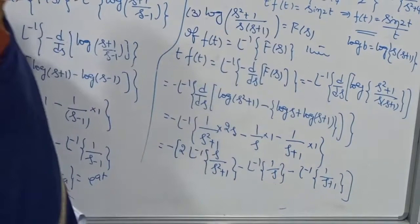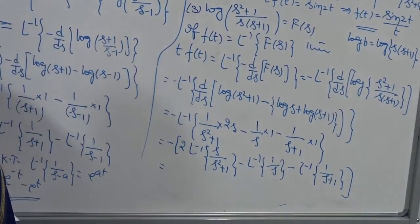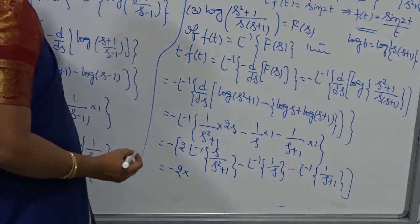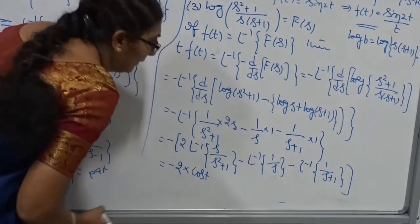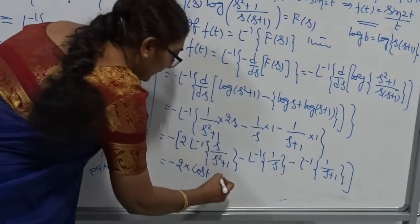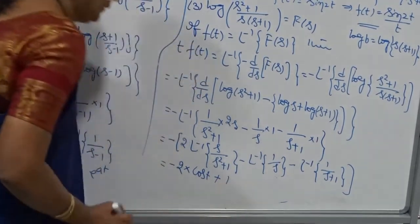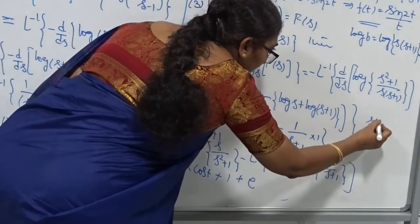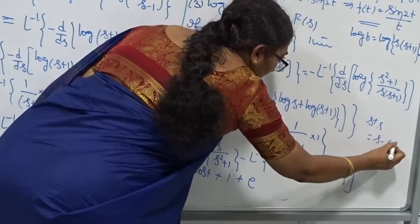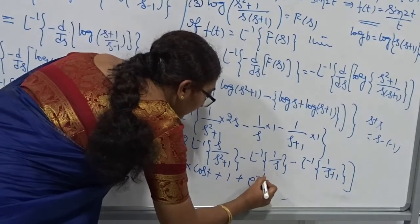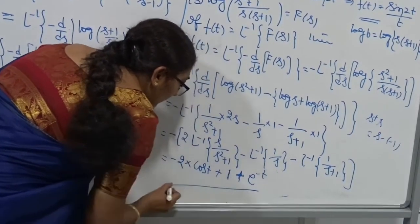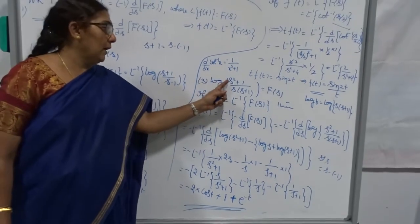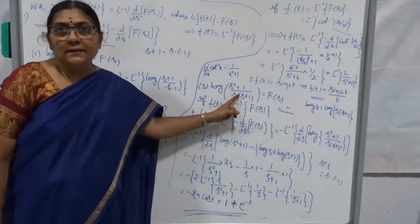Taking the minus sign inside: minus 2 times L⁻¹ of s/(s²+1) is cos(t) where A=1. Minus minus is plus: L⁻¹ of 1/s is 1. Minus minus is plus: L⁻¹ of 1/(s+1), where s+1 = s−(−1), gives e^(−t). Therefore t·f(t) = −2cos(t) + 1 + e^(−t). This is how to evaluate the inverse Laplace transform of log((s²+1)/(s(s+1))).